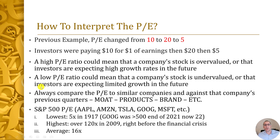The S&P 500 is 500 large cap U.S. stocks — it includes Apple, Amazon, Tesla, Microsoft, etc. So if you want to know how the U.S. stock market is doing, you can just look at the S&P 500. As a whole, the S&P 500 had a PE of 5 at its lowest point ever in 1917. Could you imagine the entire market with a PE of 5? I couldn't even imagine one of these five companies at a PE of 5.